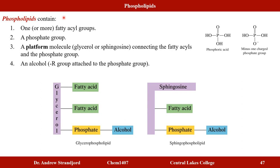A phospholipid contains at least one fatty acyl group (shown in green), a phosphate group (shown in yellow), a platform molecule (either glycerol, as in triacylglycerol, or sphingosine), and an R group — usually an alcohol — attached to the phosphate group. We will discuss two types: glycerophospholipids, which use glycerol as the platform, and sphingophospholipids, which use sphingosine.